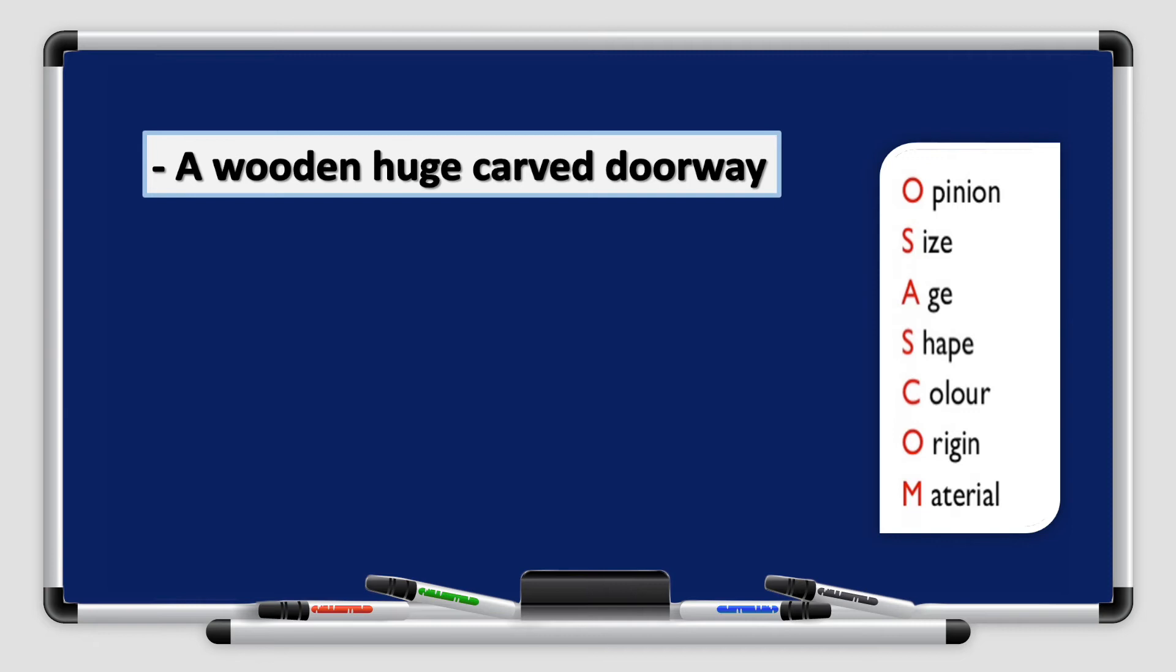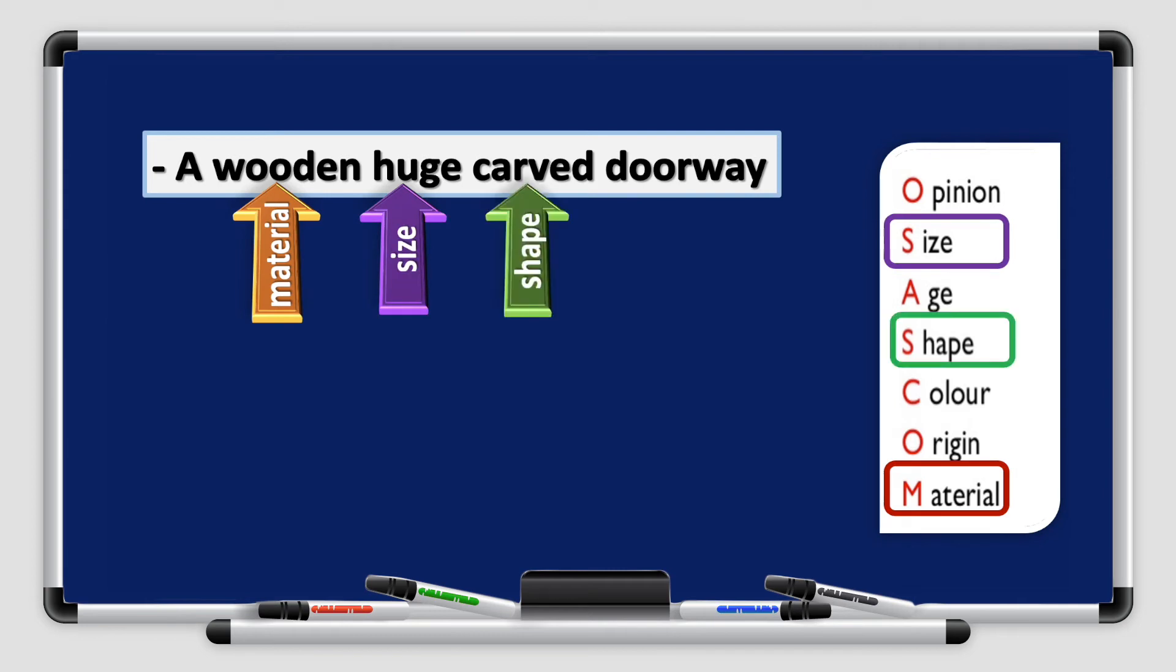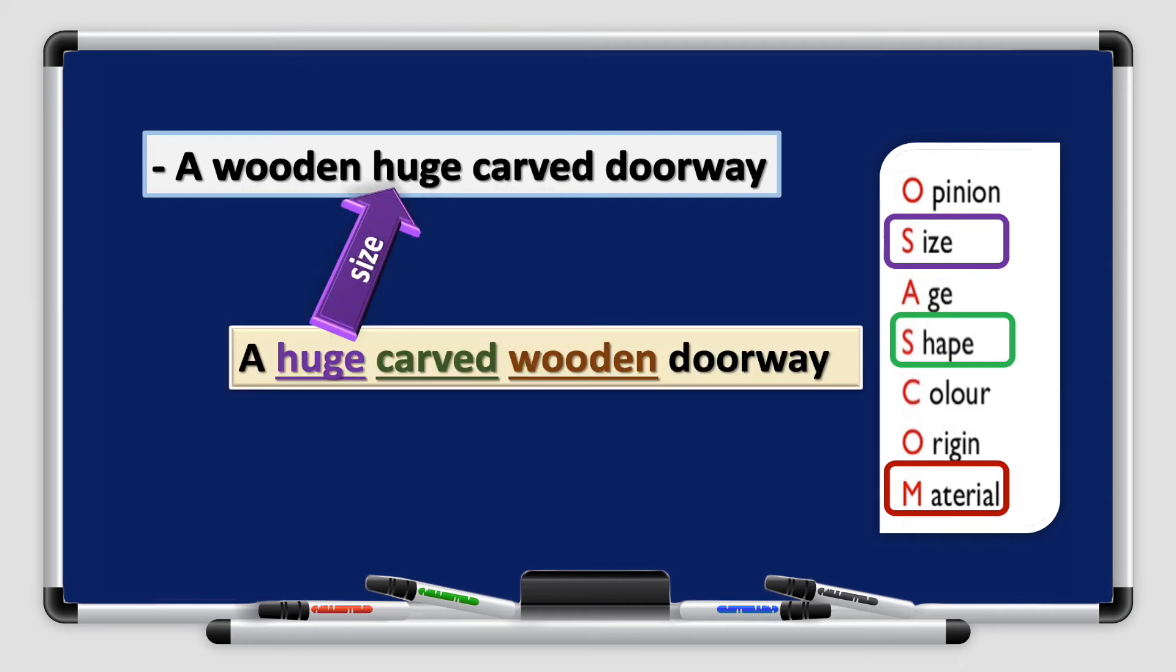Another example. A wooden huge carved doorway. Again, there is a problem with the arrangement. Wooden is material which is supposed to come last. Huge is size. And carved is a shape. So let's rearrange them. A huge carved wooden doorway. Size, shape, and then material.